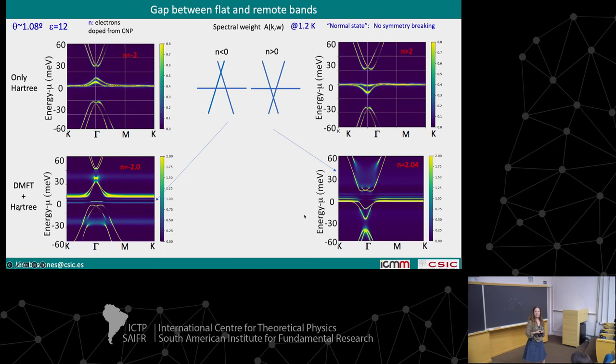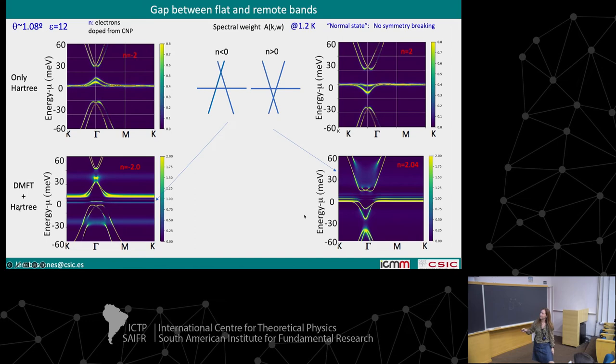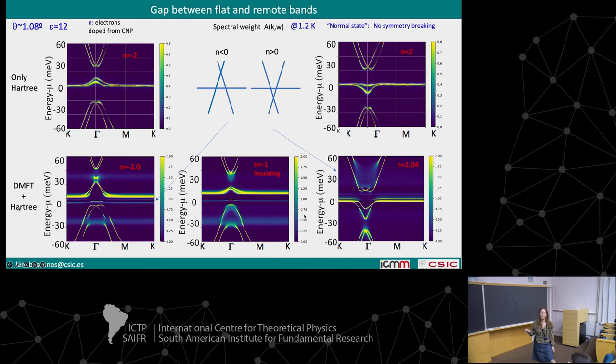Another question is whether this gap — the gap between the flat bands and the other bands — is going to be suppressed. The reason to ask this is that this gap is associated to the hybridization between the correlated and the less-correlated orbitals, and it has a tendency to be suppressed by Mott physics; in some approximations like a slave-spin approach it would vanish. What we see is that it is modified but not completely suppressed. You can see the shape of the bands at this angle: at n equal minus two and n equal two, there is a tendency to be suppressed, but it's still not really suppressed. In the insulating state at n equal minus one, the gap is still there — of course everything has become very incoherent.